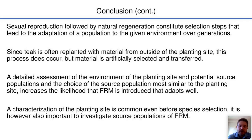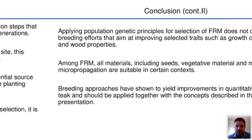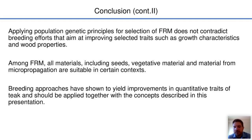A characterization of the planting site is something that is commonly done even before species selection; it is however also important to investigate source populations of forest reproductive material. Applying population genetic principles for selection of material does not contradict breeding efforts that aim at improving selected traits such as growth characteristics and wood properties. Among forest reproductive material, all materials including seeds, vegetative material, and materials from micropropagation are suitable in certain contexts. Breeding approaches have shown to yield improvements in quantitative traits of teak and should be applied together with the concepts described in this presentation.